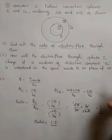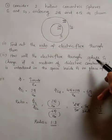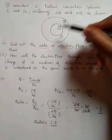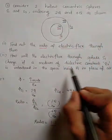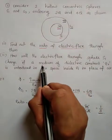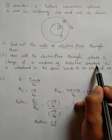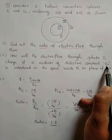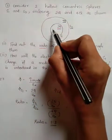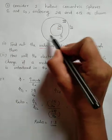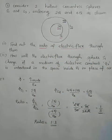The second question is: S1 is filled with a medium having dielectric constant epsilon r. We add this medium to S1 and find its effect on the flux through S1.